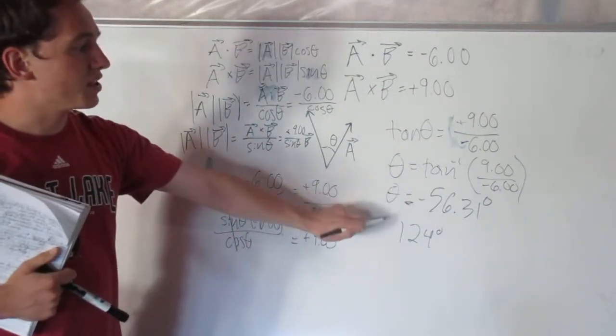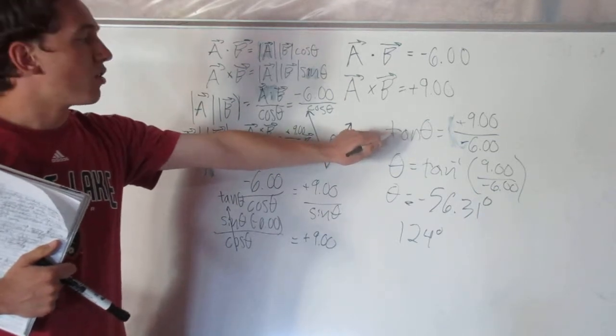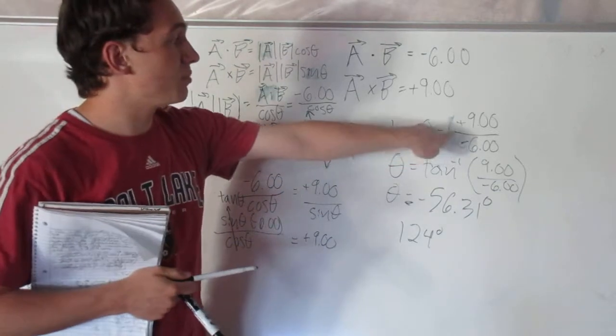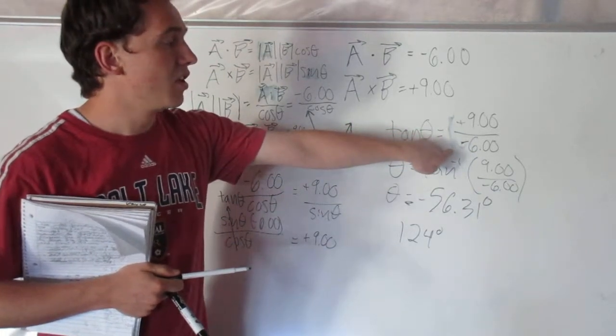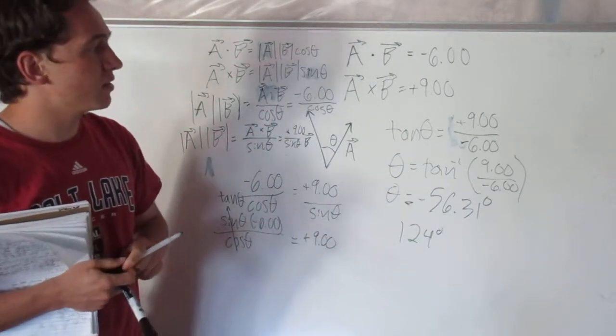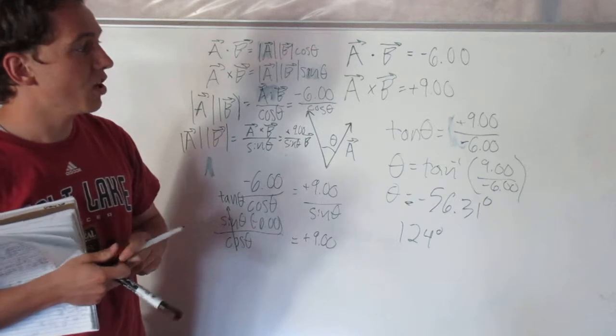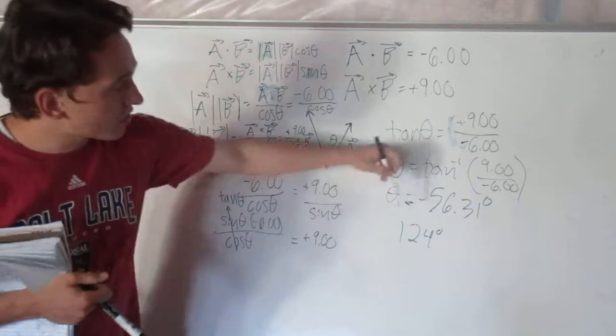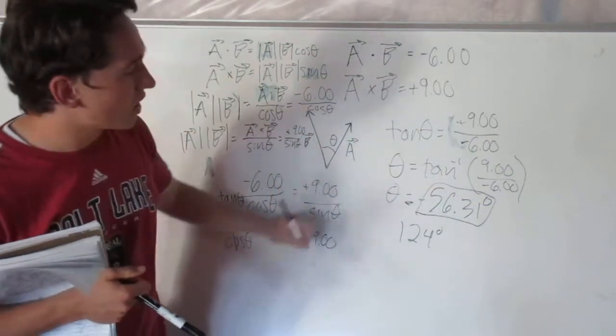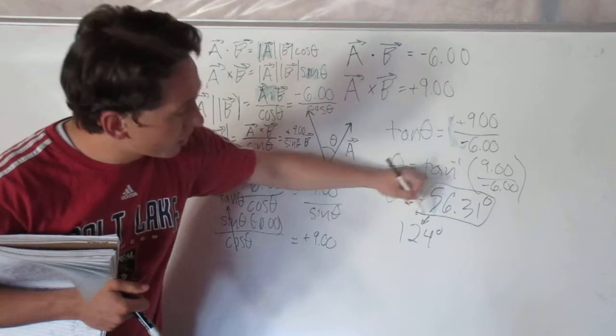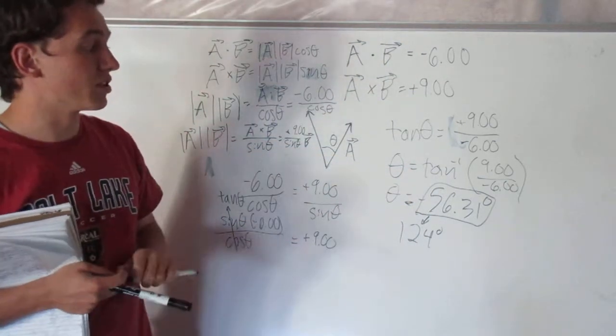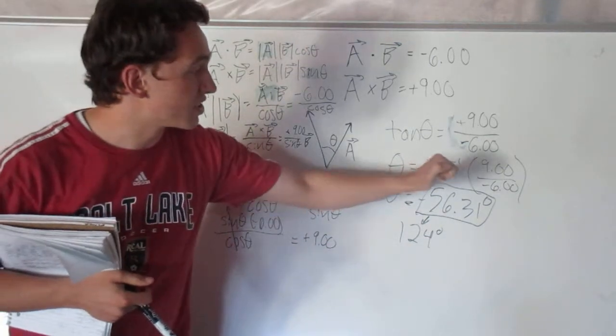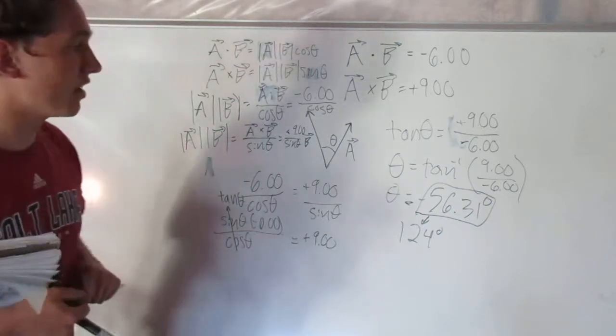Now what's interesting about this is if you look at tangent, we know that tangent is a periodic function, meaning that in order for tangent to equal this value, it's going to hit it multiple times. Tangent has a period of 180 degrees, which means every 180 degrees it's going to hit that value. So if you actually take this right here and add 180 degrees to it, you're going to get about 124 degrees, which is the correct answer.